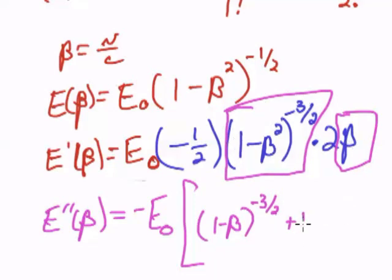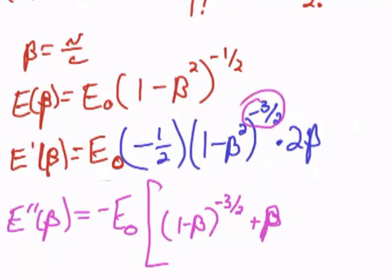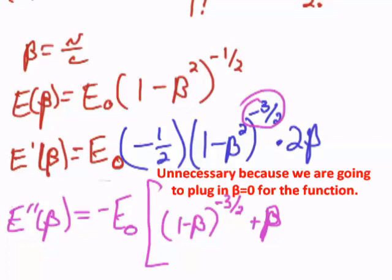Plus the derivative of this thing times beta, so I'll go ahead and put in the beta, and then we've got to take the derivative of this thing, which I can already tell you is going to be a mess, and it's also going to be unnecessary. I'm going to go ahead and do it, even though it's a mess, and it's unnecessary.